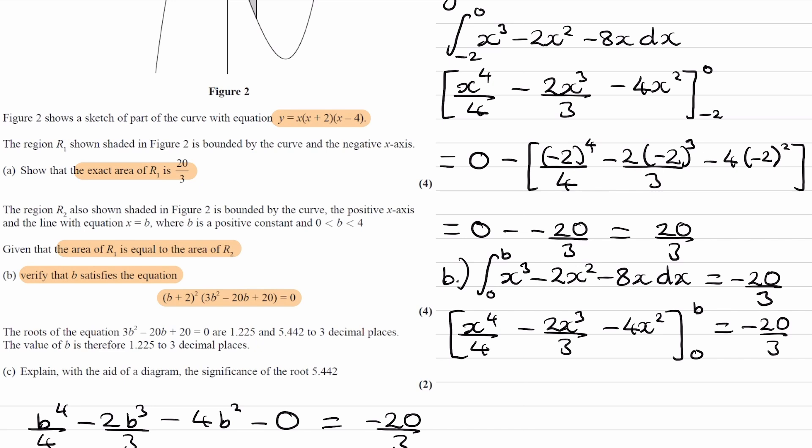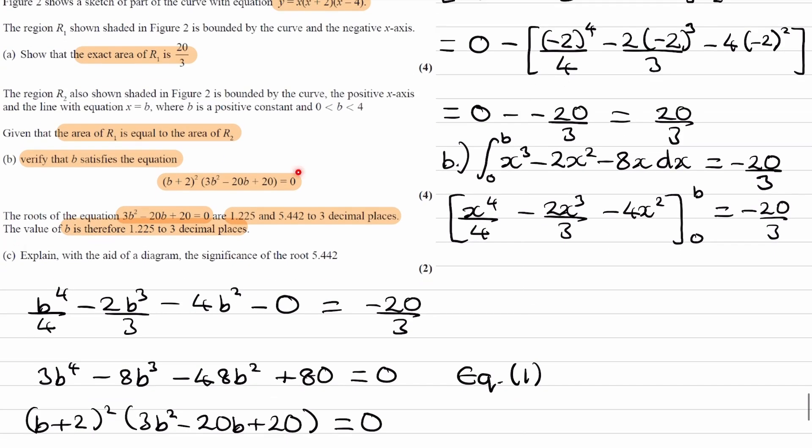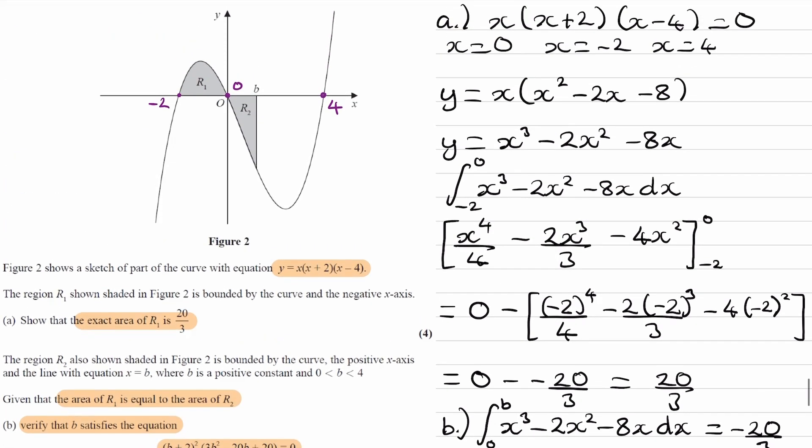And finally, onto part c. The roots of the equation 3b squared minus 20b plus 20 equals 0 are 1.225 and 5.442 to 3 decimal places. The value of b is therefore 1.225 and we want to explain with the aid of a diagram the significance of the root 5.442. Let's just go back a step, think about what b actually represents. b is this x value here, such that this area is equal to this area. This equation gives us the solutions to b. Let's first look at this here, the b plus 2 squared. When we set this equal to 0, that would give you one of the solutions: b equals minus 2. If we look at the diagram, that's over here. When b equals minus 2, then the area between 0 and minus 2 would be equal to r1, because it's just the exact same thing as what we did in part A.